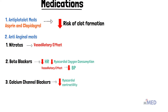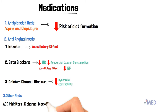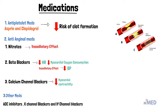Calcium channel blockers reduce the calcium influx into the cell and decrease the myocardial contractility, which can also reduce the myocardial oxygen demand. Other medications like ACE inhibitors, potassium channel blockers, and HCN channel blockers are also used.